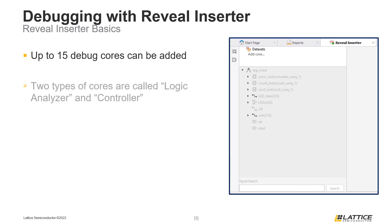There are two types of debug cores that can be added using Reveal Inserter. The first type, Logic Analyzer, is used to create the conditions for observing signals during a debugging session. The second type, Controller, has several uses: it can control and observe signals using virtual LEDs and switches, access a project's memory spaces, or read and write to the control registers of hard IP in a project.